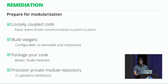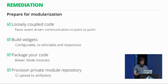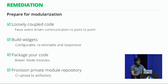Try and share your code as widgets rather than big modules. These widgets can be configurable, reskinnable, and responsive, so they can be used in different applications within an enterprise. Start by packaging your code — you can share it as Bower components or Node modules. Use a package manager such as NPM. Within enterprises, it's very difficult to create a module and upload it to a public repository, as enterprises wouldn't allow that.